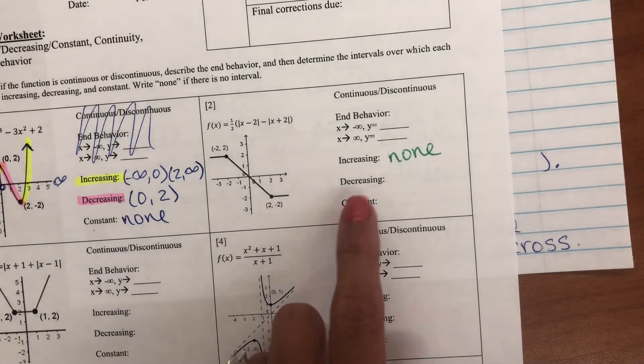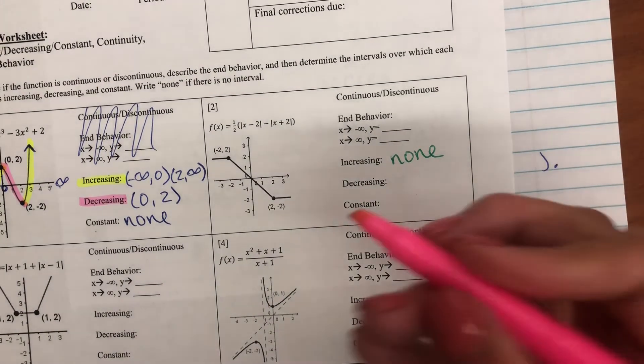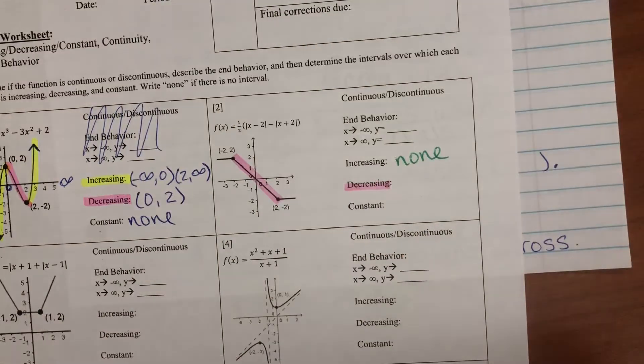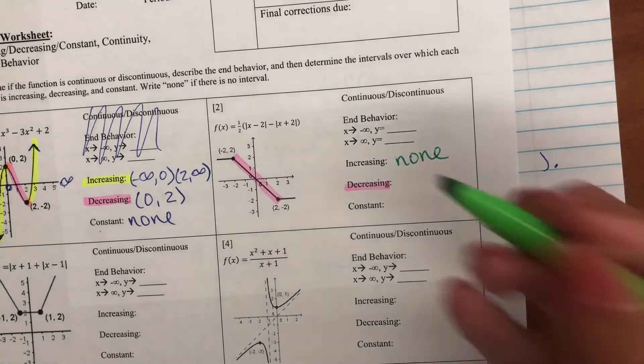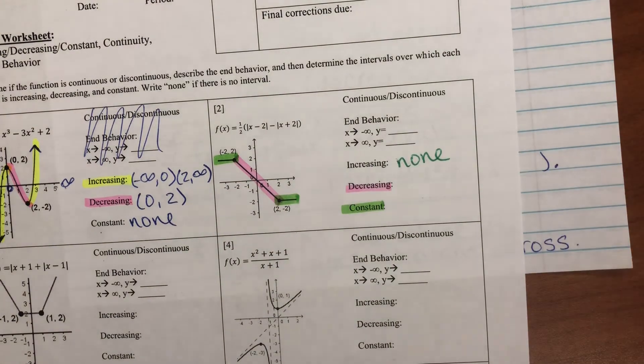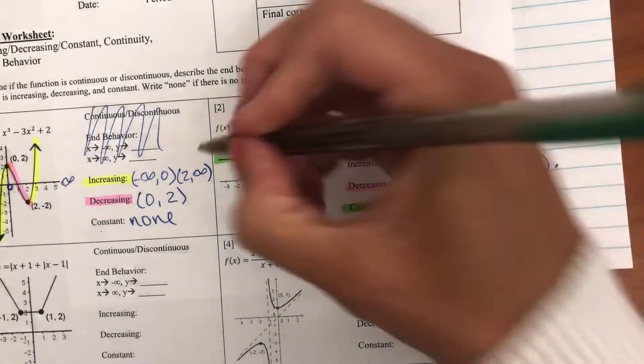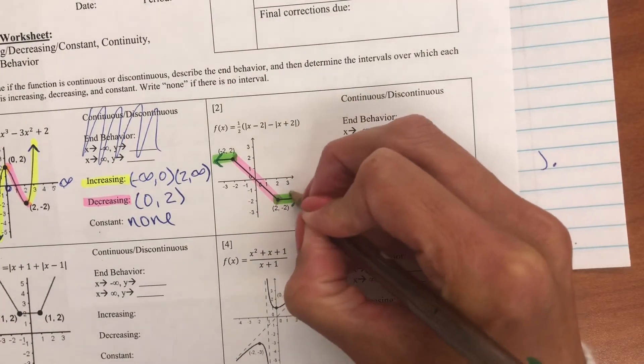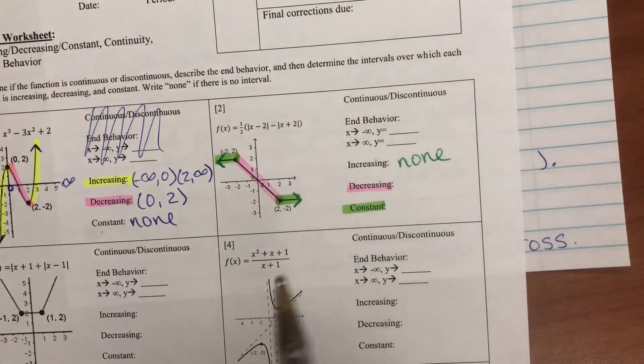Now, let's find decreasing where the graph is going down. That would be right here. And then constant, where the graph is going straight across. That would be here and here. And we're just going to treat these as arrows on the ends here.